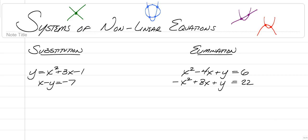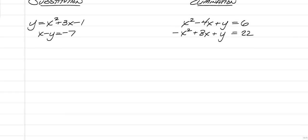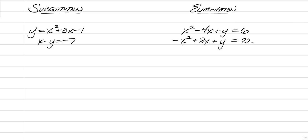The purpose of this video is to show you how to do it algebraically. The first method I'm going to show you is using the substitution method. Right here, we see that we have y is equal to x squared plus 3x minus 1. What we can do is take y and substitute it in, or take the x, substitute it, or move the y over and have x is equal to y minus 7, and substitute that in.